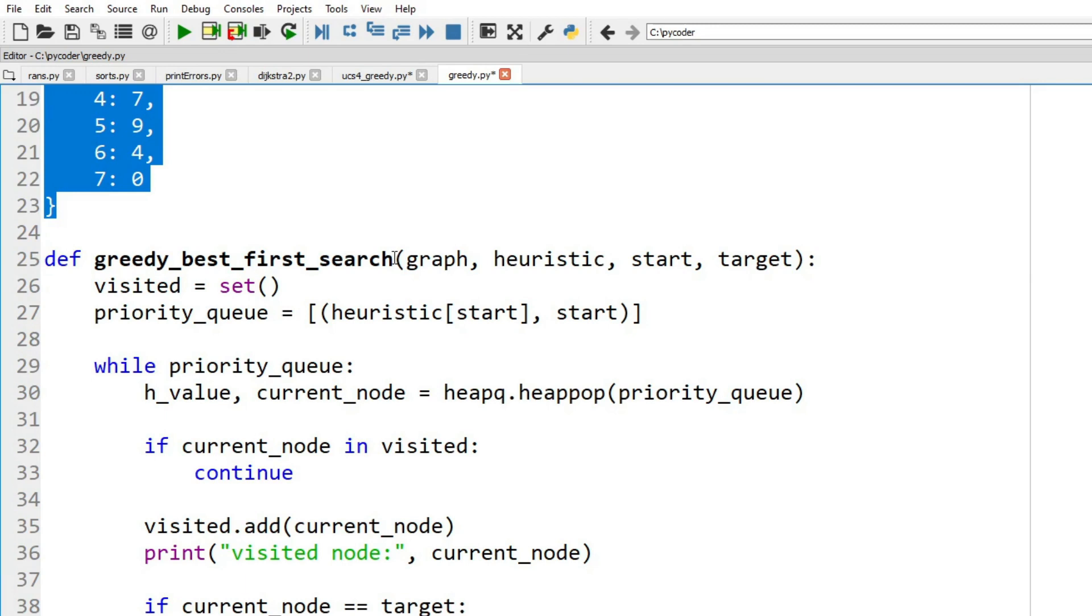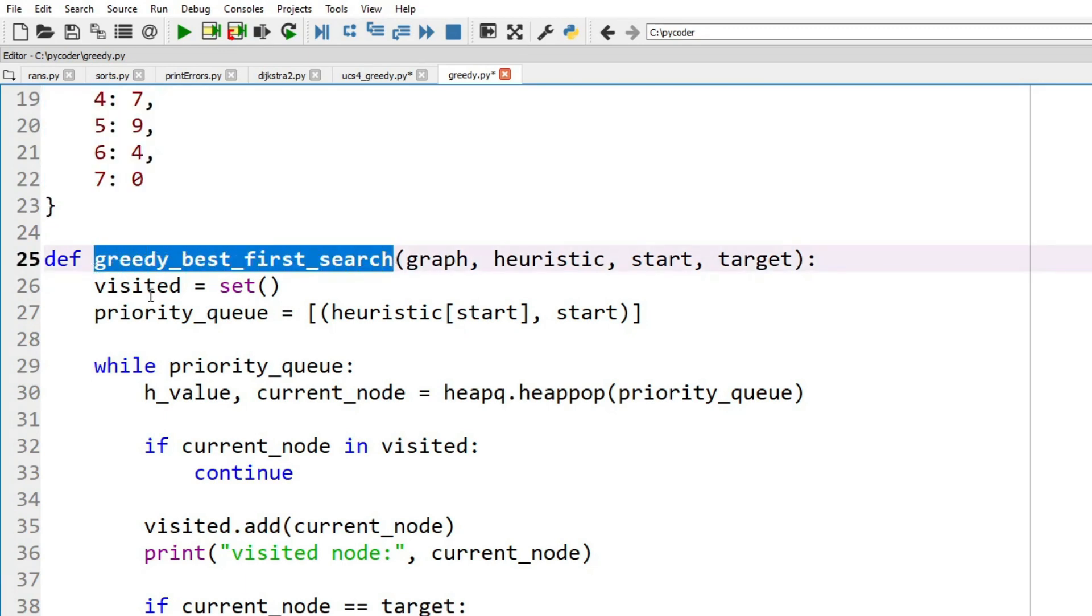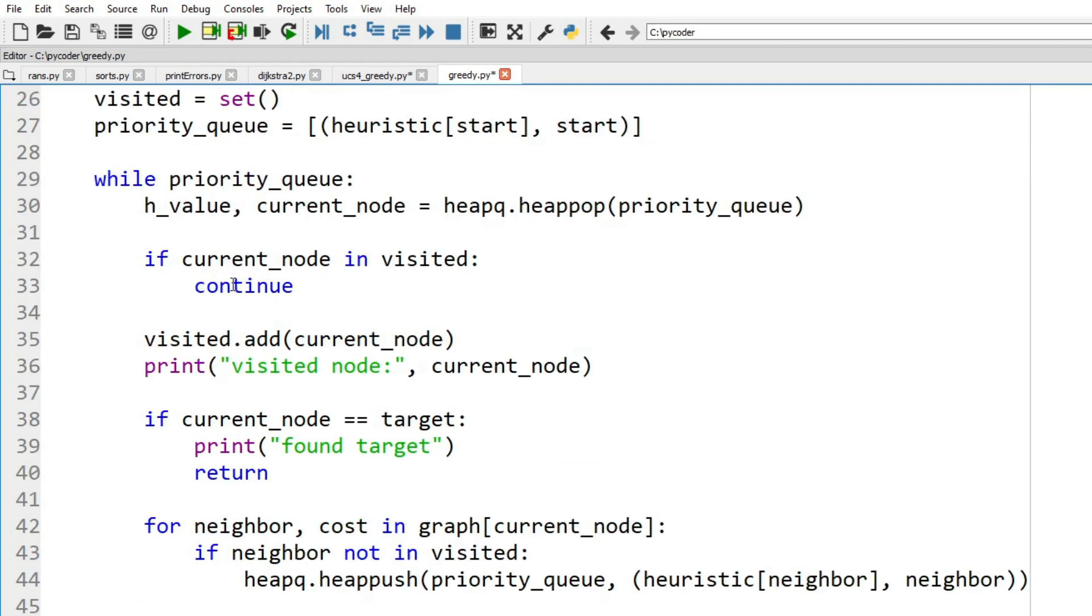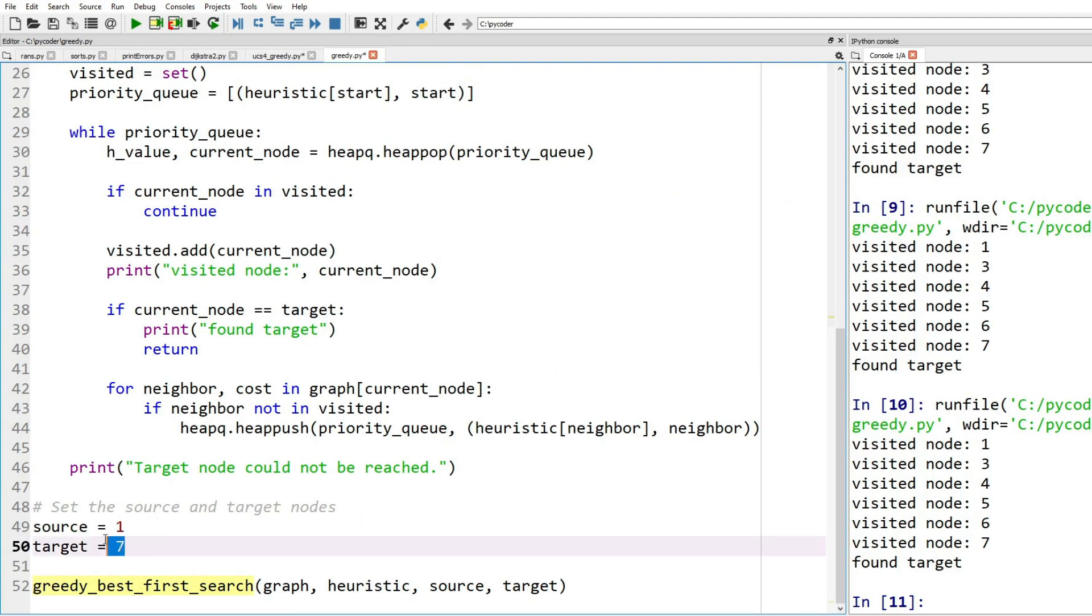Now we have our greedy best-first search. We're going to use a priority queue. We'll just briefly look at the code. You can see we start at 1 and our target is 7.